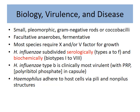Haemophilus influenzae is divided into different types from A to F, and biochemically classified from 1 to 8. The most important type is Haemophilus influenzae type B, called HiB — not HIV, which is human immunodeficiency virus. HiB is the most virulent because it carries polyribitol phosphate (PRP) in its capsule, which allows the bacteria to cling to structures. It can attach via pili — hair-like projections — or to non-pilus structures as well.